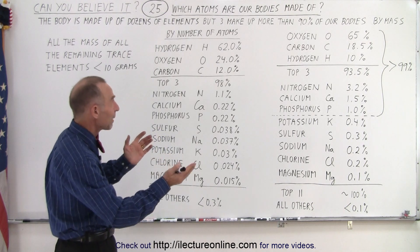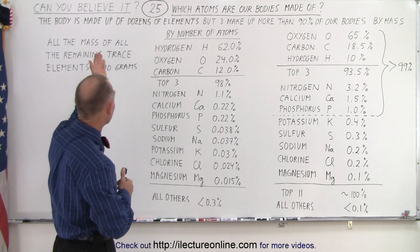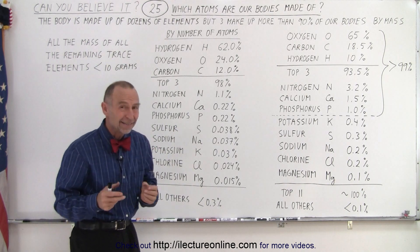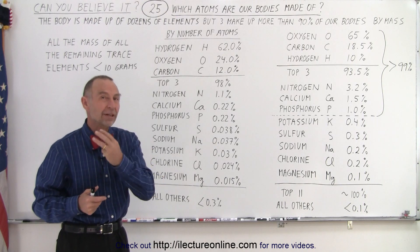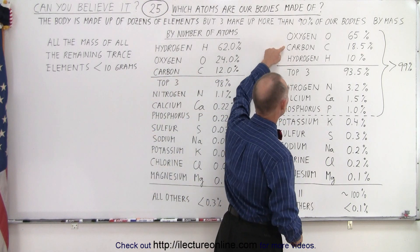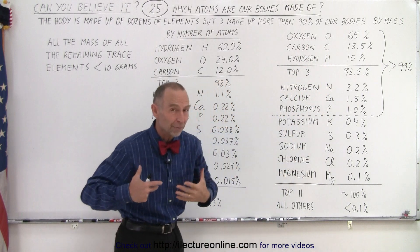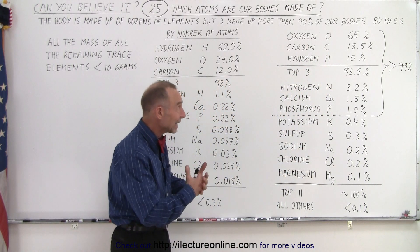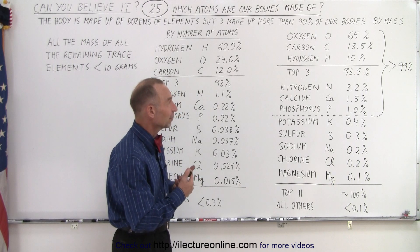Now we can either take it by mass or we can take it by the number of atoms. If you take a look at the top sentence, more than 90% of our bodies are made up of just three of the elements on the periodic table. And they are oxygen, carbon, and hydrogen. Notice 65% of our bodies are made up of oxygen, 18.5% are made out of carbon, and about 10% are made out of hydrogen.